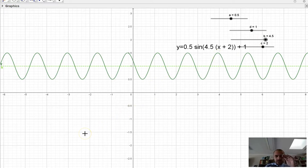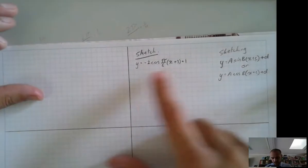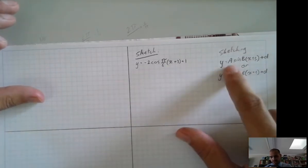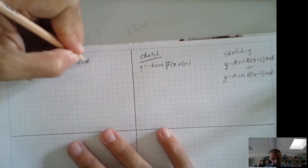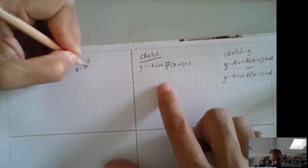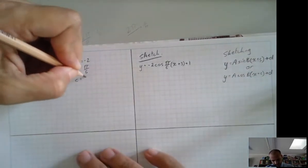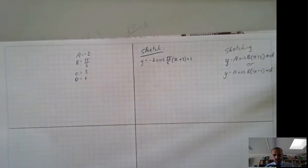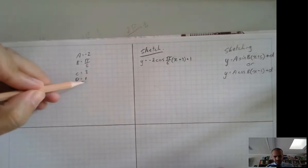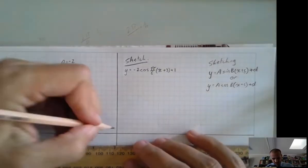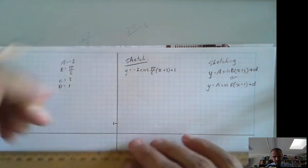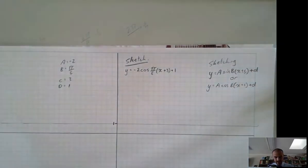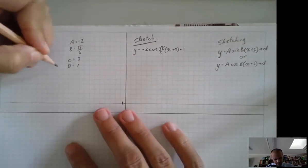We can now sketch something using all of that. I'm going to sketch y equals negative 2 cos (π/6)(x + 3) plus 1. First, I identify all my a, b, c, and d values: a equals negative 2, b equals π on 6, c equals 3, and d equals 1. The order I like to work in is: first deal with the d value. My d value is 1, it moves it up by 1 — that's going to be my new middle line.